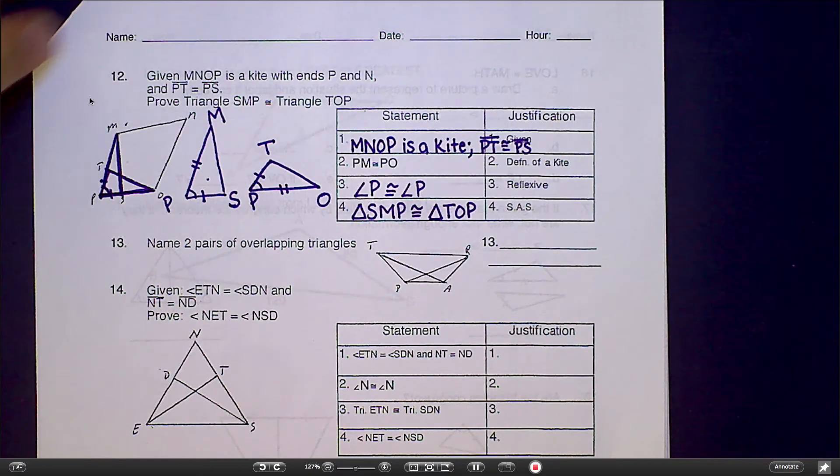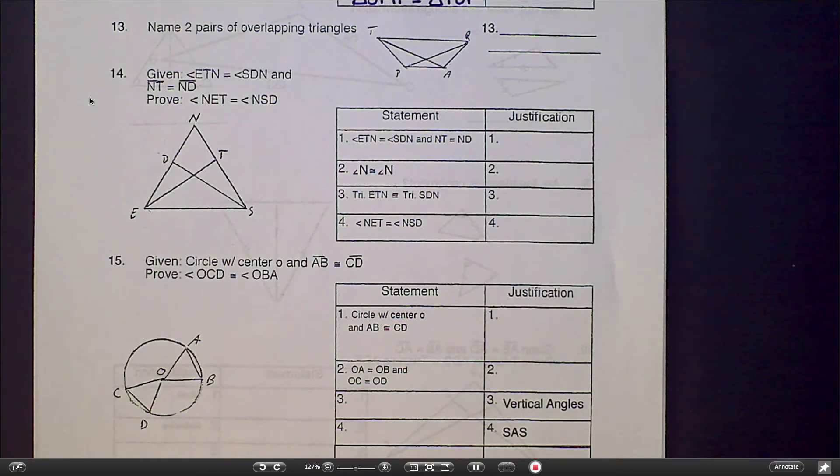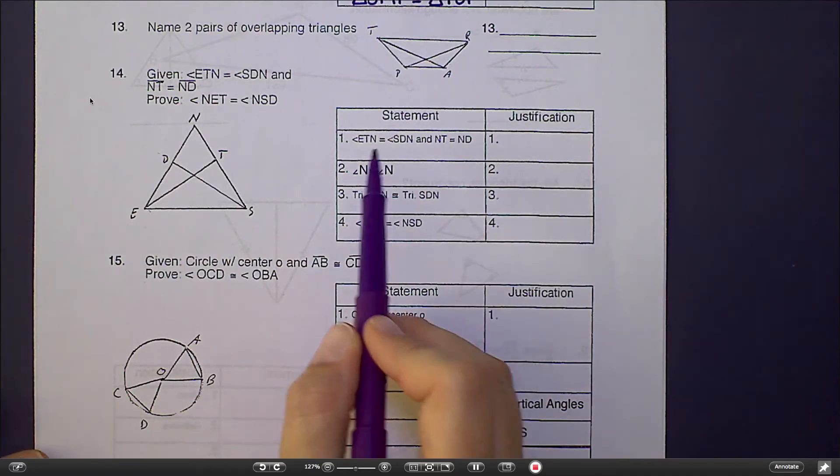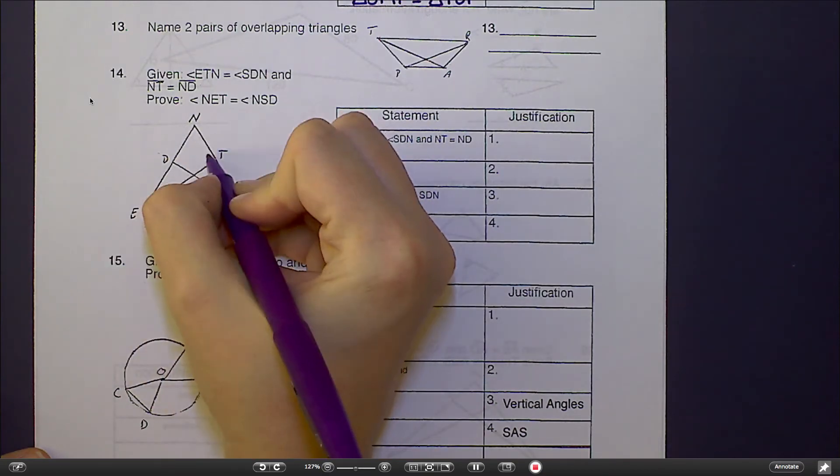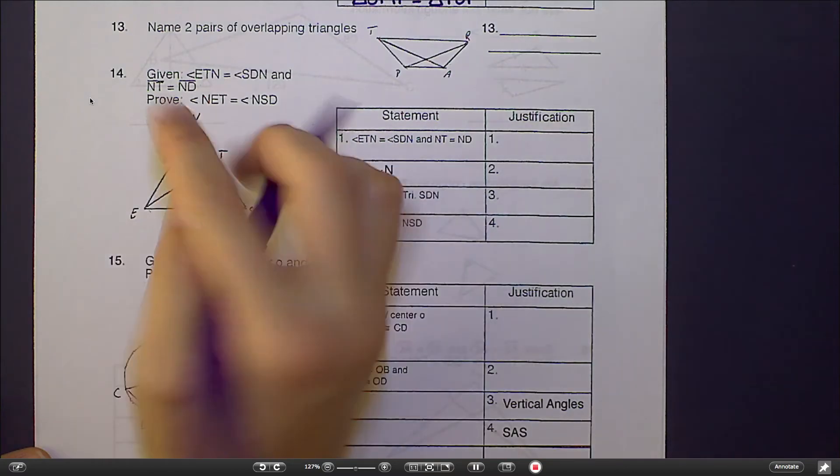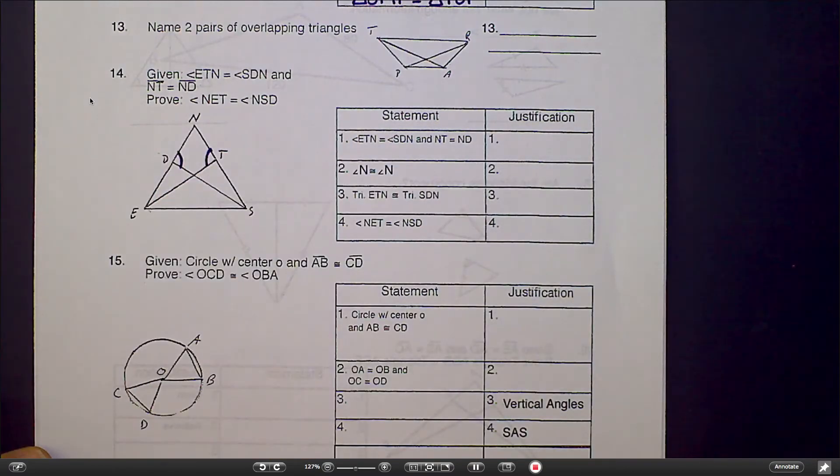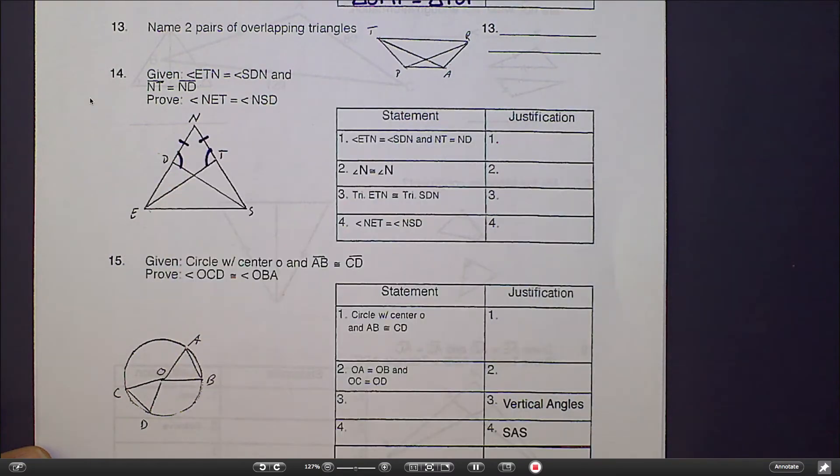Let's take a look at number 14. Number 14 also works with overlapping triangles, but I can't tell quite yet which triangles I'm going to want to focus on. So let's start by marking my given information. I'm given that angle ETN, which is this angle right here, is congruent to SDN, so that would be this angle. And I'm also given that NT is congruent to ND.